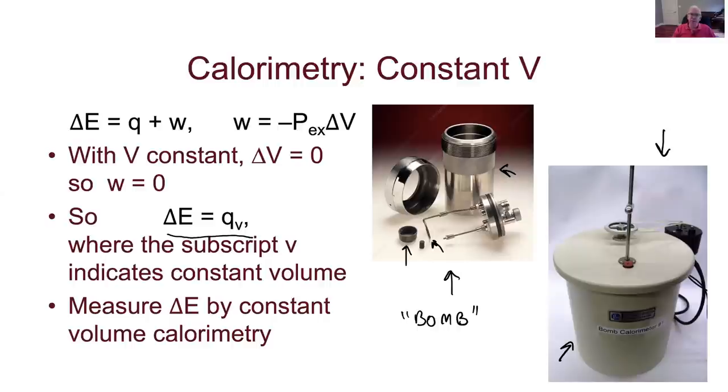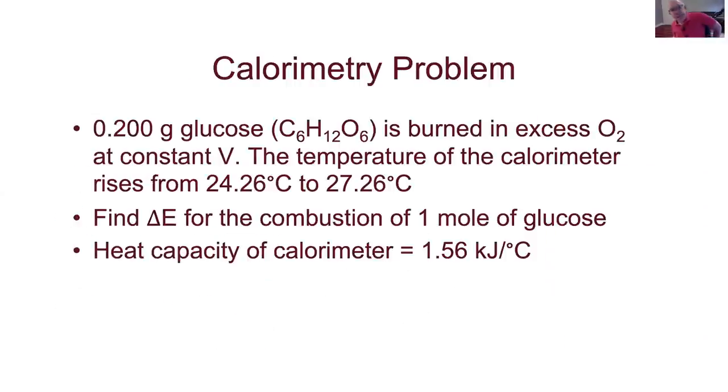So let's do an example problem. This says we're going to burn two tenths of a gram of glucose. Just think sugar. That's not exactly table sugar, but it is a sugar. Two tenths of a gram of glucose. We're going to burn it in excess oxygen at constant volume. So in one of those calorimeters like was just in the picture, the temperature of the calorimeter, meaning of everything there, that would be the temperature of the bucket with the water in it, with the stuff inside it. So the temperature I measure there goes up by three degrees when this happens, that bucket is well insulated so that we think all the heat's going to be trapped in there. I get a temperature change of three degrees when I burn my two tenths of a gram. My goal is going to be to find delta E for the combustion of one mole of glucose. And there's a note down here on the bottom, which says the heat capacity of the calorimeter is that quantity there.